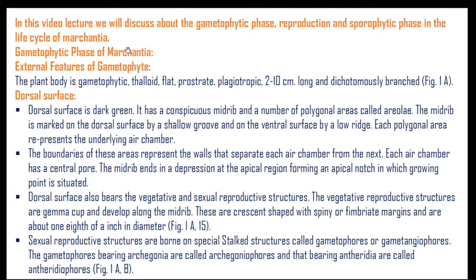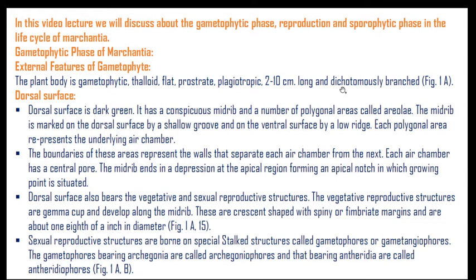In this video lecture we will discuss the gametophytic phase, then reproduction in Marchantia, and after fertilization, the sporophytic phase — these are the three phases of the life cycle. The plant body of the gametophyte is called a thallus, which is flat, prostrate, plagiotrophic, 2 to 10 cm long and dichotomously branched.